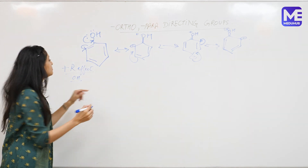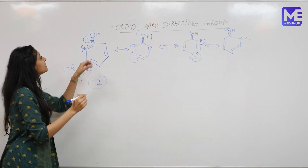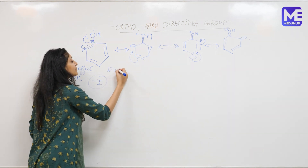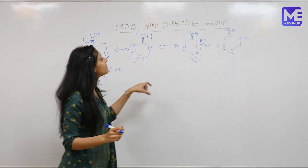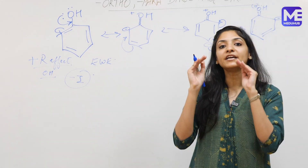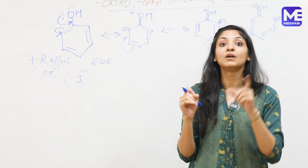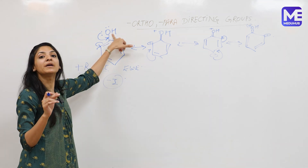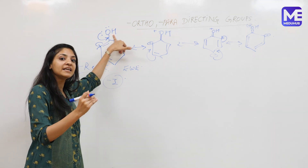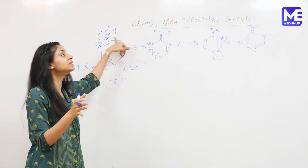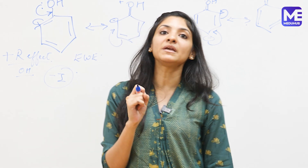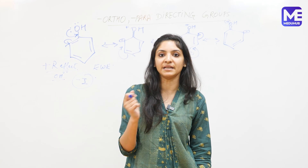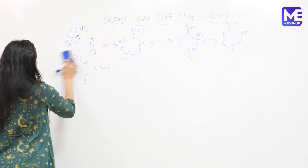We also need to consider the minus I effect of the phenol group. Because oxygen is electronegative, the phenol group has a minus I (electron-withdrawing inductive) effect, which decreases the electron density on the benzene ring slightly. However, the plus R effect is also in play, so phenol is ortho/para directing and also slightly activating towards electrophilic substitution reactions — meaning the reaction is faster than it is with benzene.